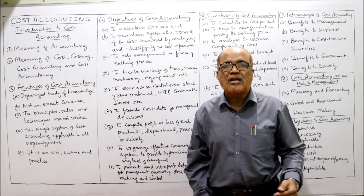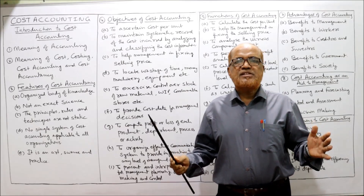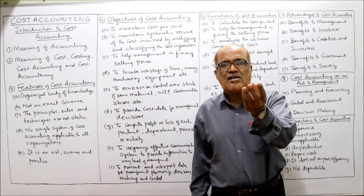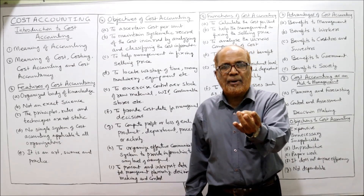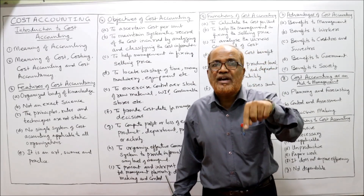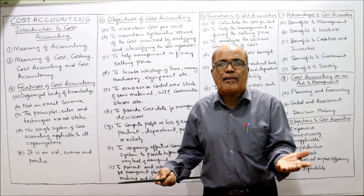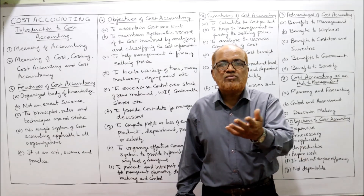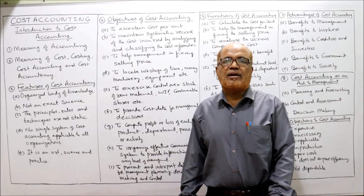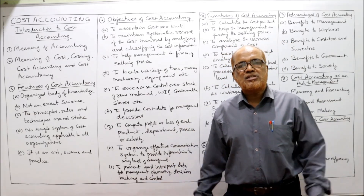Another objective is to locate wastage of time, money, machinery, and equipment. A business is successful only when it effectively utilizes all resources — time, money, machinery, labor, and equipment. If there is wastage of time, material, or machine time, the business will not be efficient. Cost accounting locates where wastage of time and material is occurring.